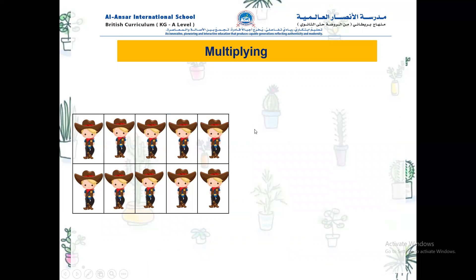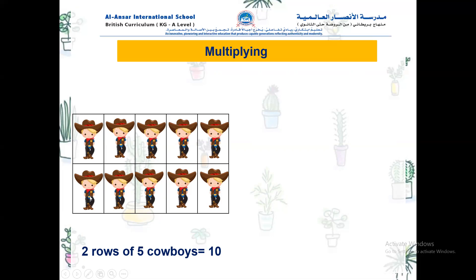Now let's try this one. How many rows can you see here? One, two — two rows of cowboys. And in each row count how many cowboys we have: one, two, three, four, five. So we have two rows of five cowboys. We need to count in fives to know the total: five, ten. So the total is ten. Two rows and in each row we have five cowboys, so five times two equals ten. Super amazing!